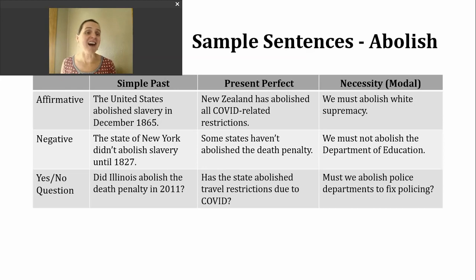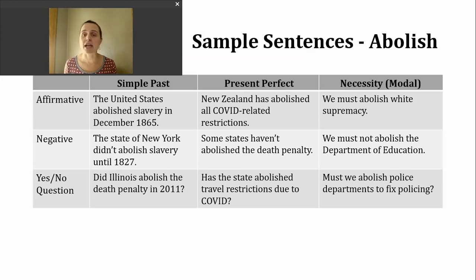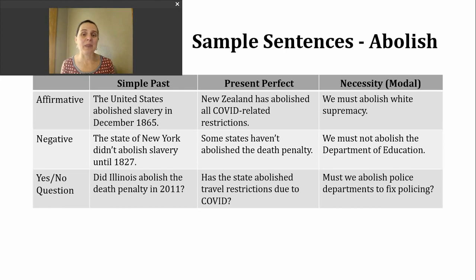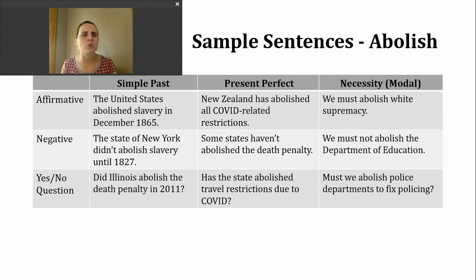In the negative, we can insert 'not' after 'must.' In the United States, it's not common to hear a contraction form with that. Here's an example: We must not abolish the Department of Education. Finally, if we want to make a question to ask whether something is necessary, we can start with 'must,' then our subject, and then the base verb: Must we abolish police departments to fix policing? This is what made me think of abolish — I've been hearing people say 'abolish the police' this week, and I've also seen it in numerous articles debating how to end systemic racism in the United States.